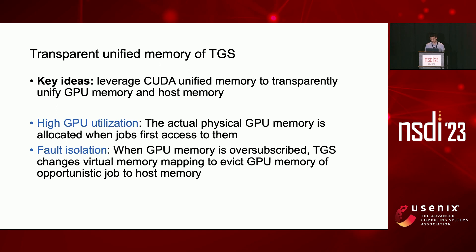To solve this challenge, TGS uses CUDA unified memory allocation as an interaction layer for GPU memory allocation. When a GPU virtual address is allocated to a container, it may be translated to either GPU memory or host memory. When the DL framework claims all available GPU memory, TGS only allocates the requested virtual memory from the CUDA unified memory space. The actually used memory triggers GPU page faults and is swapped into GPU memory when first used. When GPU memory is full, TGS prioritizes placing blocks of production jobs in GPU memory and evicts blocks of opportunistic jobs to host memory. This is transparent to the containers, as they continue using the same virtual memory addresses, which are translated to physical addresses at different locations.